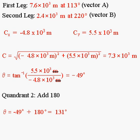The final displacement vector after both legs of the journey is 7,300 meters at an angle of 131 degrees. This was a long problem, but the core was simply adding vectors. We converted the velocity vectors into displacement vectors using time, then added the displacement vectors — nothing new, just long and complicated.